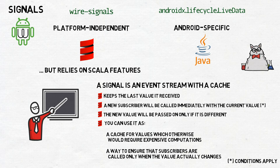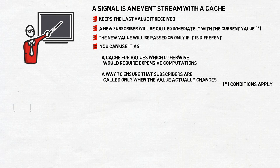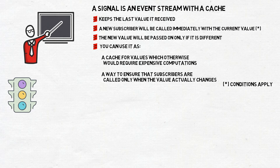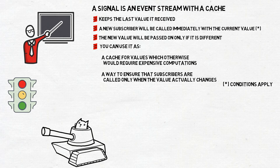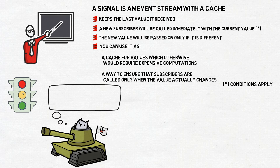Thus, a signal can help us with optimizing performance on both ends — as a cache for values which otherwise would require expensive computations, and as a way to ensure that subscriber functions are called only when the value actually changes. You can think of it as traffic lights. You are the driver. You come to the crossroads and check the traffic lights — that means you subscribe to them — but you also immediately get the current value and can act on it. If it's green, you go. If it's red or yellow, you stop and wait for a change. One advantage is that in some cases you don't have to wait. If it was an event stream, you would have to stop each time and wait until a new event tells you it's safe to go. In case of a signal, if you see a green light as the current value, you don't have to stop.